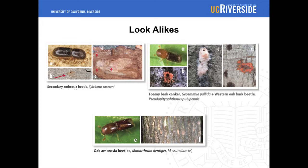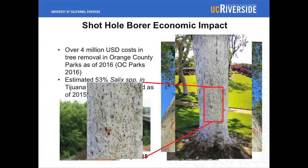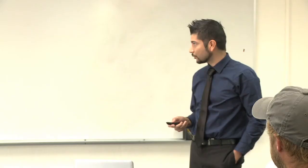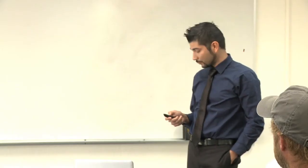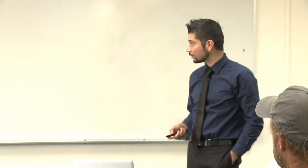The fungi associated with Corotio shot hole borer have been named Fusarium corrotum and Graphium corrotum. Regarding economic impact, in OC parks, over $4 million in costs for tree removal as of 2016, which I imagine that number has increased. Typically you'll see a situation like this where it heavily attacks sycamores, which are common in OC parks.